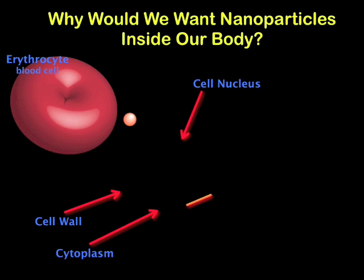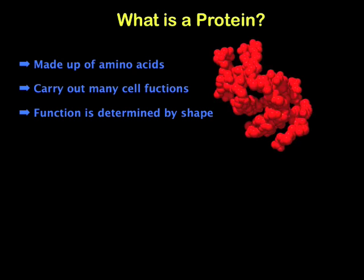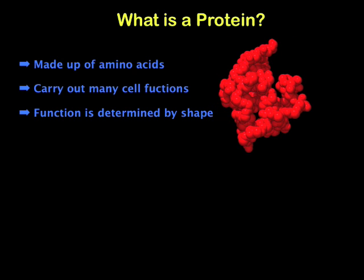One of the most important factors is determining how a nanoparticle will function in the body when it interacts with proteins. Proteins are biomolecules that are encoded in your DNA, and they carry out different functions in each cell, helping to regulate cellular conditions. There are many different kinds, and some of them are about the same size as nanoparticles or smaller. The protein pictured above is called lysozyme, which is important in regulating cell death. Some proteins, called enzymes, catalyze biological reactions inside the body, and they do this because of their specific shape.